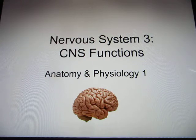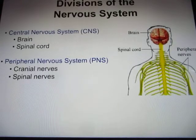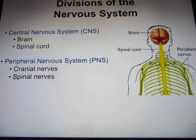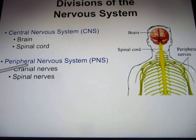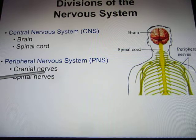The nervous system can be divided into the central nervous system, including the brain and the spinal cord. You also have the peripheral nervous system, including the cranial nerves and spinal nerves.